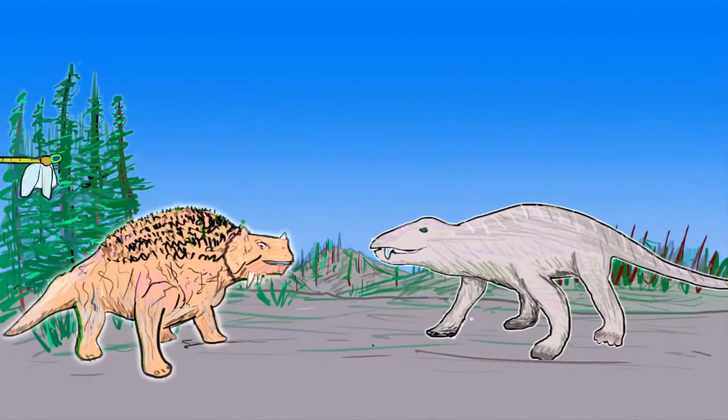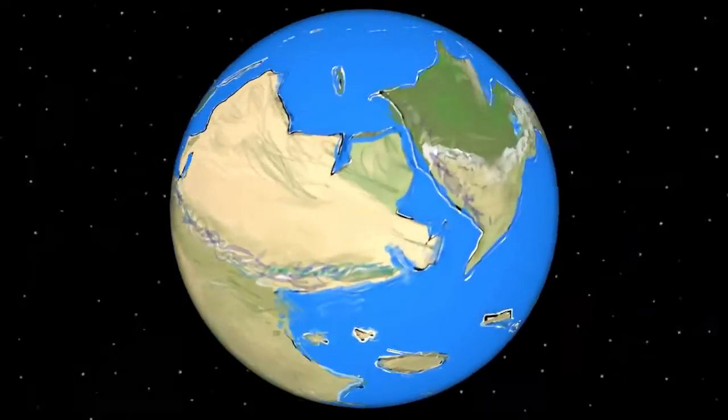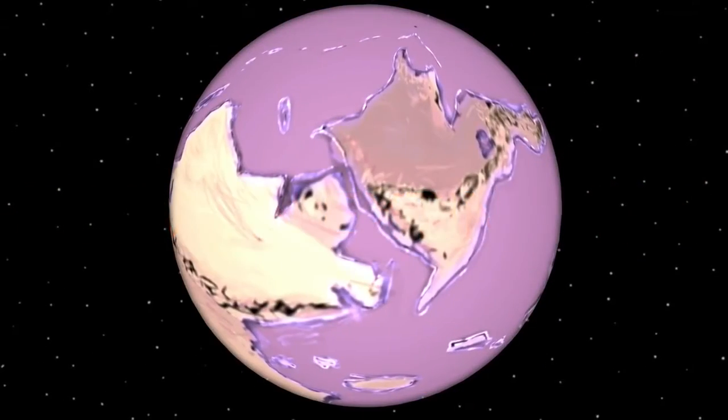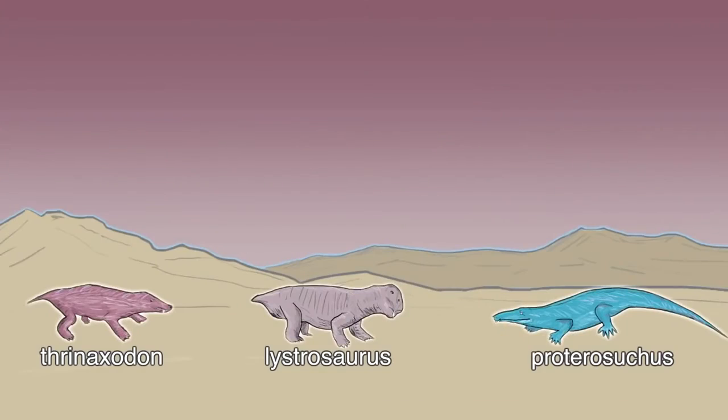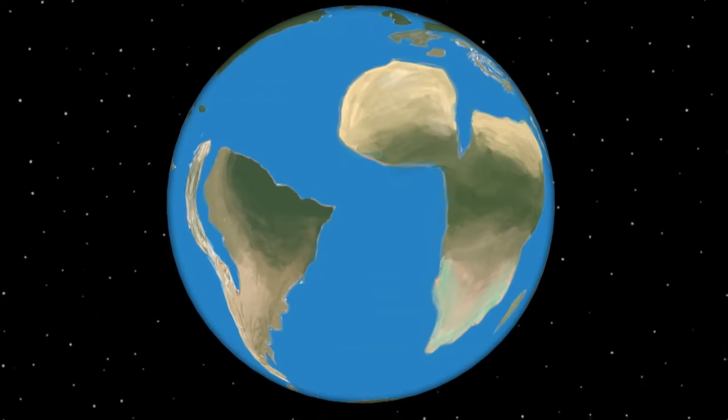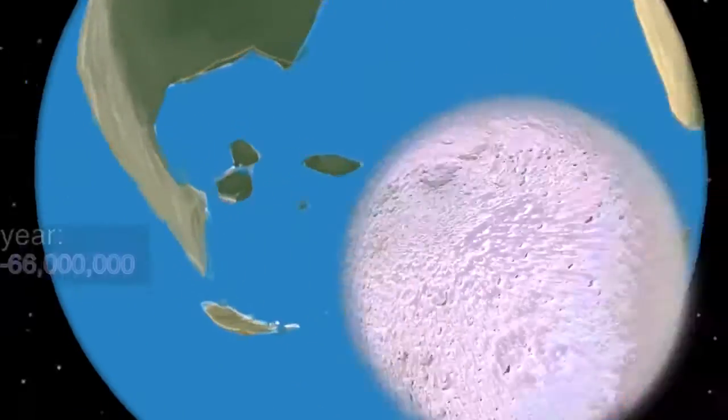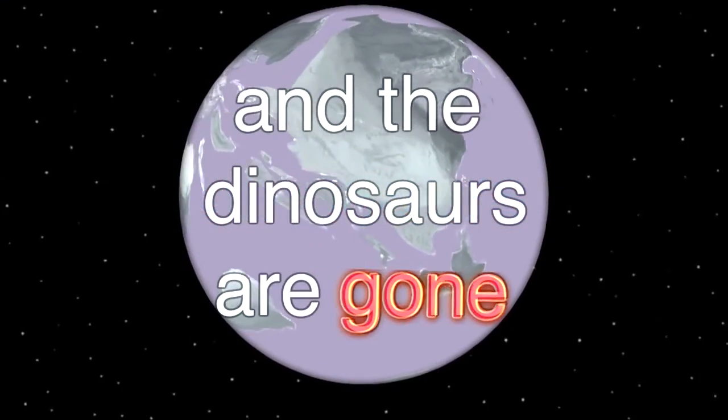And now everything's huge including bugs. Want to see a map of the land? Sure. Oh fuck now everything's dead. Just kidding here are the survivors. Keep your eye on this one because it's about to become the dinosaurs. Here's another map of the land. Yeah it broke apart don't worry about it does that all the time. Here comes a meteor. And the dinosaurs are gone.